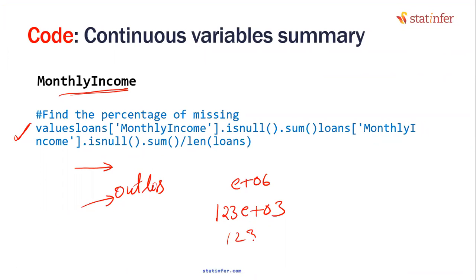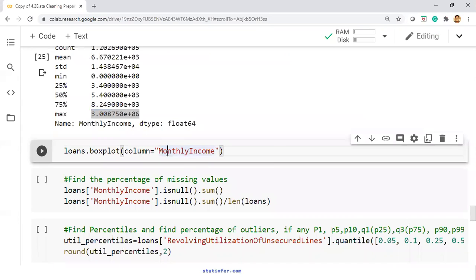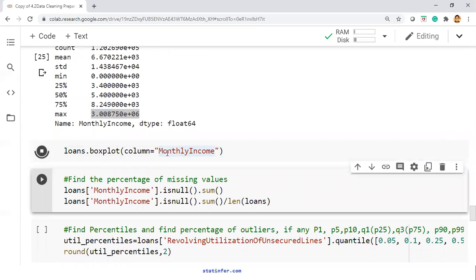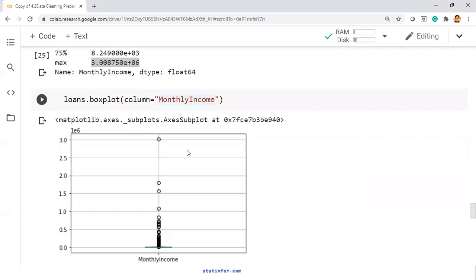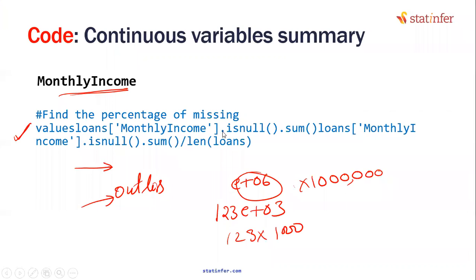123 into thousand. Plus six means into how many hours the number is there? Those many zeros you have to keep it. Exponential way of writing it. So three point E power plus six means you have to multiply that with six zeros. It's a very huge number. Obviously, it looks like it has outliers. A quick box plot will tell us the story. Oh yeah, there are outliers. There was one more issue. Monthly income is a special one. There is one more issue. One issue is outliers are there. That is one issue. What about the other issue?